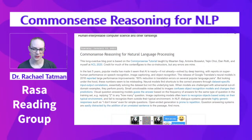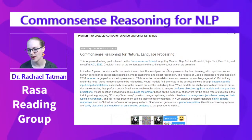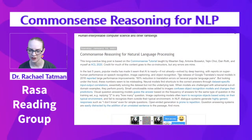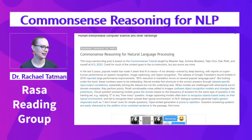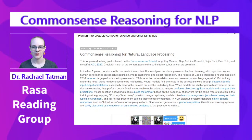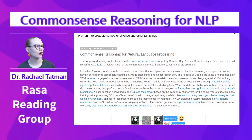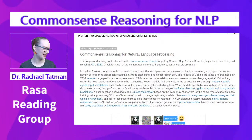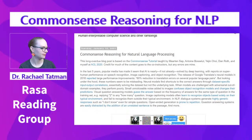This long-overdue blog post is based on the Common Sense tutorial taught by Martin Sapp, Antoine Bosselut, Yejin Choi, Dan Roth, and myself at ACL 2020. Credit for much of the content goes to the co-instructors, but any errors are mine. Also, I think I said yesterday that Hal Daumé was one of the workshop presenters — he definitely wasn't; I was incorrect about that. Yejin Choi is at the Allen Institute for Artificial Intelligence and also University of Washington, which is where I did my PhD.